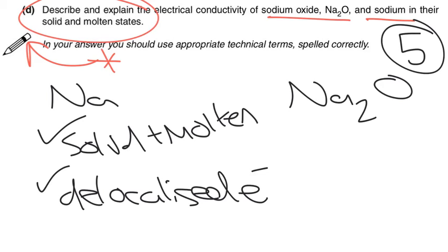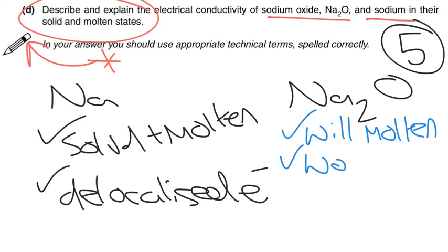Now moving on to the Na2O, we need to say that it will not conduct electricity in the solid state, but it will conduct electricity in the molten. So what we need to say first is that it will when molten. You can say liquid for this, just please make sure you don't say aqueous because that's a different thing entirely. So it will when it's molten and it won't when it's solid.